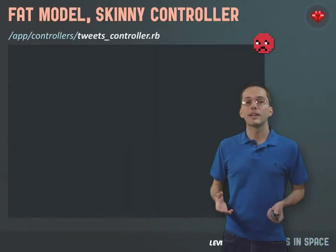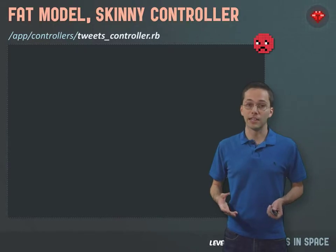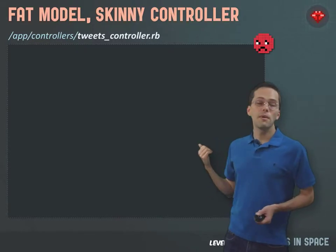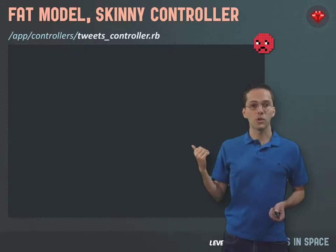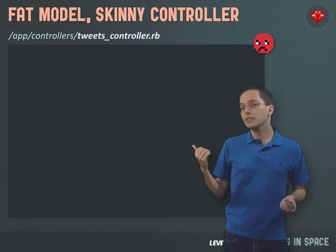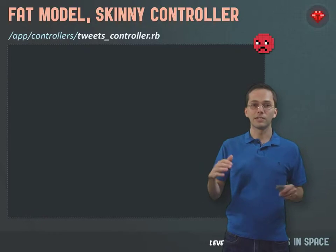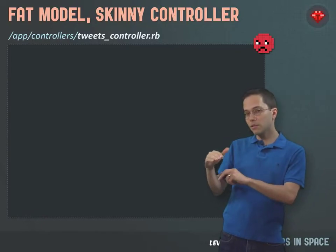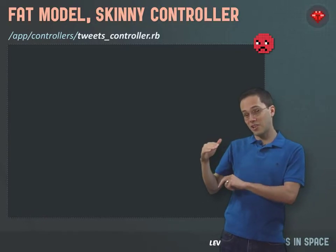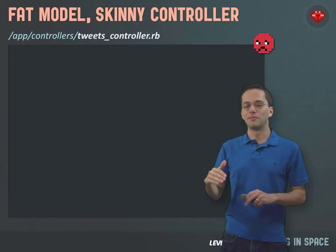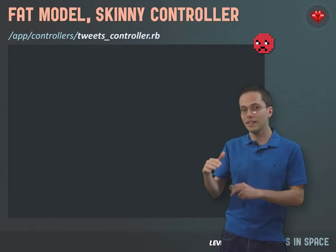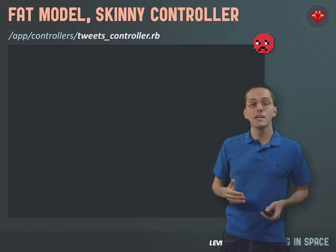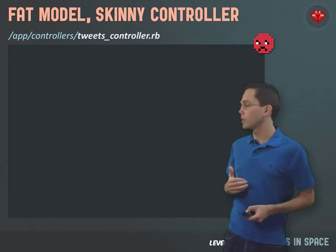The first best practice we're going to take a look at is a pretty common one called Fat Model Skinny Controller, which of course talks about taking code out of your controller into your model. So your model should be fatter — not too fat — and your controller is skinny. So let's take a look at some code.